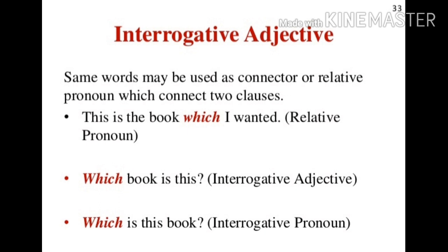Interrogative adjectives — the same word may be used as a connector or relative pronoun which connects two clauses. Let's see where it can be used as an adjective. In the first example, 'This is the book which I wanted' — here, which is working as a relative pronoun. In example number 2, 'Which book is this?' — here, which is working as an interrogative adjective, because after which we have the noun 'book,' and as an adjective modifies a noun, it is playing the role of interrogative adjective. In example number 3, 'Which is this book?' — it is an interrogative pronoun, because after which we are not having any noun or pronoun to modify.